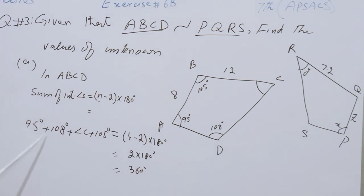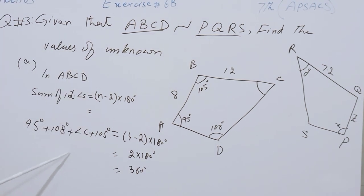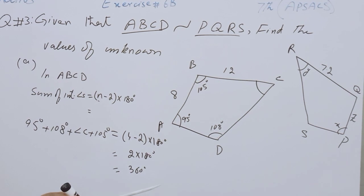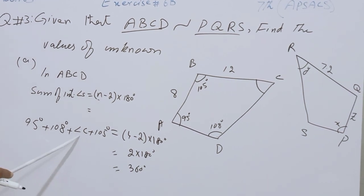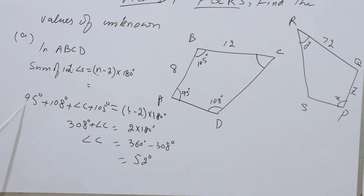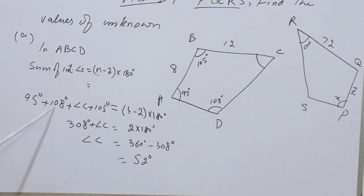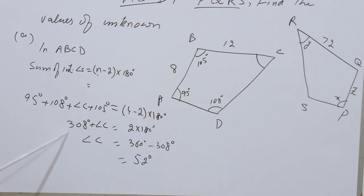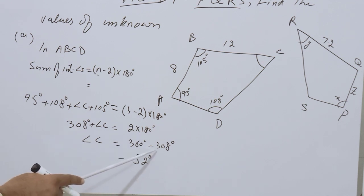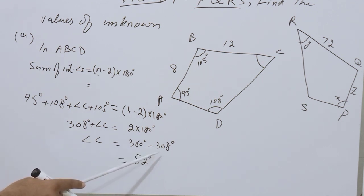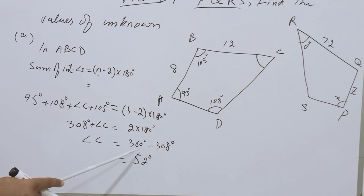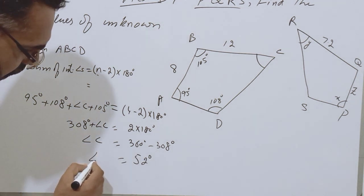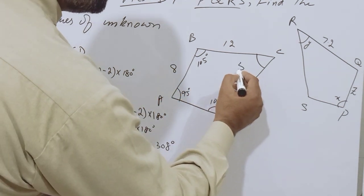Now students, we will sum up all the known angles on the left side and transfer the total to the other side. 95 plus 105 is 200; 200 plus 108 is 308. So 308 plus Angle C equals 360 degrees. When we transfer 308 to the other side it becomes minus, and 360 minus 308 gives 52 degrees. That is the value of Angle C, so Angle C equals 52 degrees.